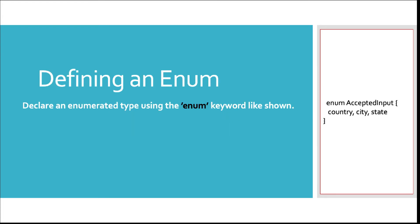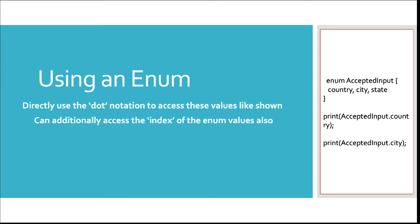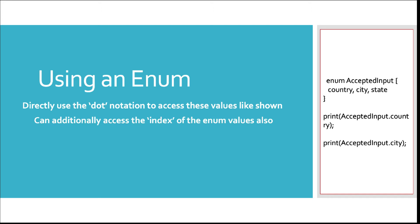Creating an enum is very simple: just use the keyword `enum` followed by the name. For example, `enum AcceptedInput`. Inside, define the three constants: country, city, and state. You then use dot notation to access these values — so `AcceptedInput.country`, `AcceptedInput.city`, or `AcceptedInput.state` — rather than floating them around as raw strings, which makes for much cleaner, modularized code.